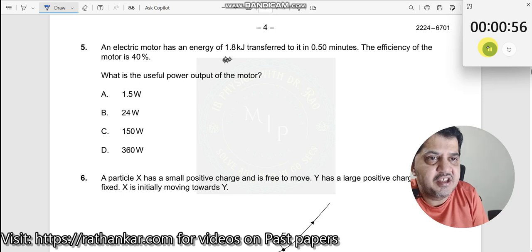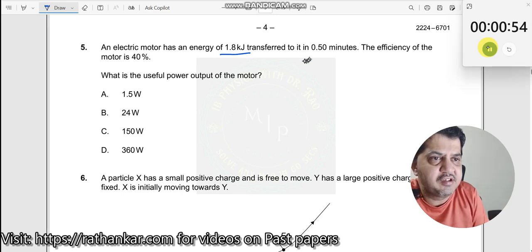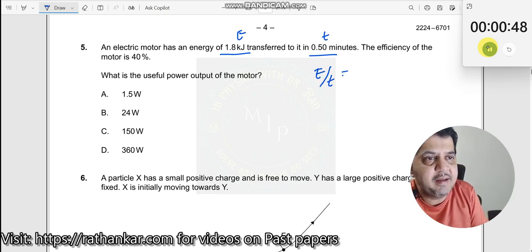An electric motor has an energy of 1.8 kilojoules transferred into 0.5 minutes. When there is energy given and time given, you can easily find energy by time which is power.